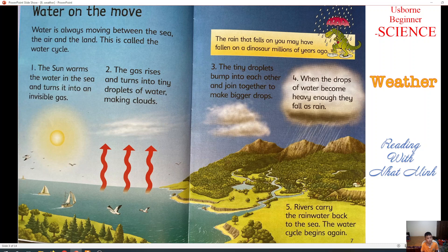Next, the gas rises and turns into tiny droplets of water, making clouds. Next, the tiny droplets bump into each other and join together to make bigger drops. And lastly, when the drops of water become heavy enough, they fall as rain.